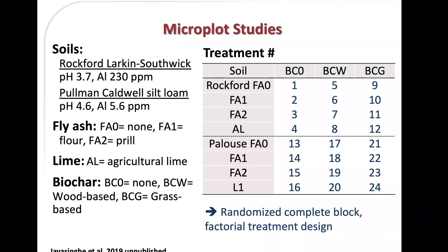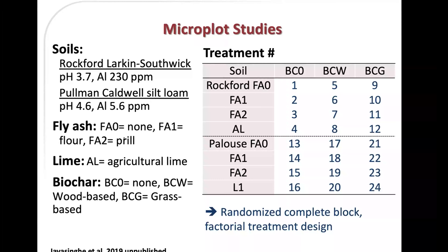We started with a set of microplot studies — basically large pots. We took two soils: a Rockford Larkin Southwick soil with a pH of 3.7 and 230 ppm available aluminum, and a Pullman Caldwell silt loam with a pH of 4.6 and about 5.6 ppm aluminum. We had two sources of fly ash — a flour form and a prilled form. The prilled form turned out to be essentially insoluble, like little glass balls, with really no effect, so we only looked at it in one year. We also had agricultural lime and two sources of biochar — one wood-based and one grass-based.